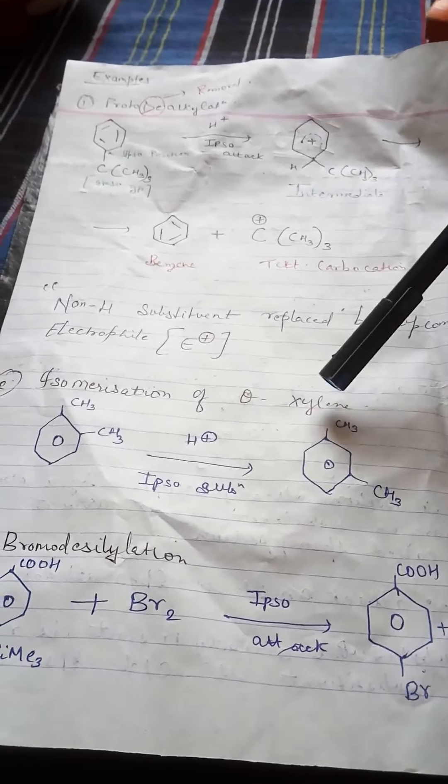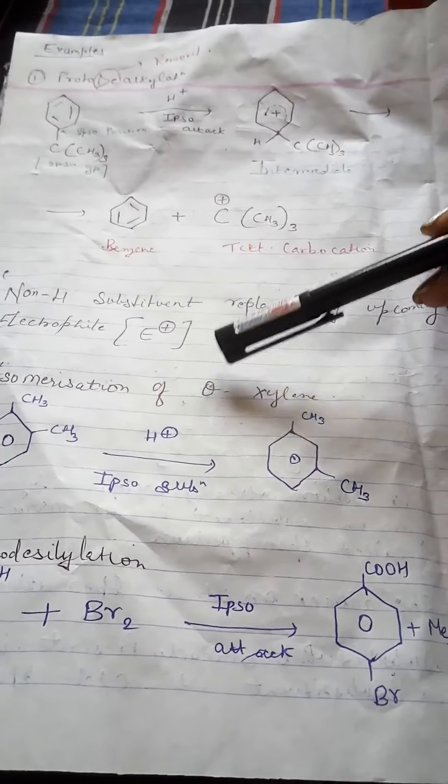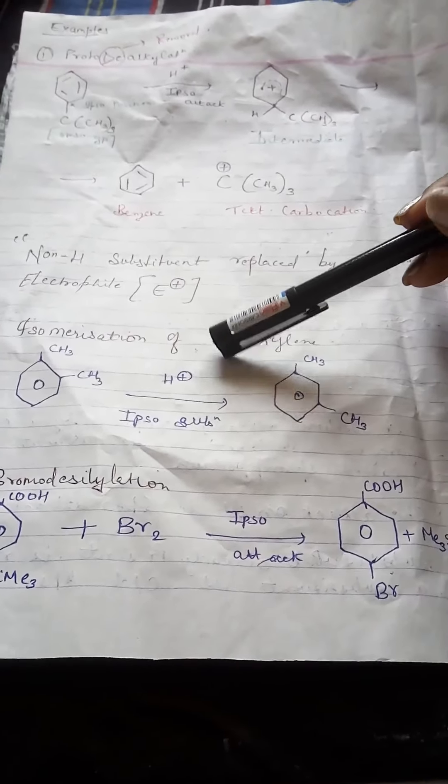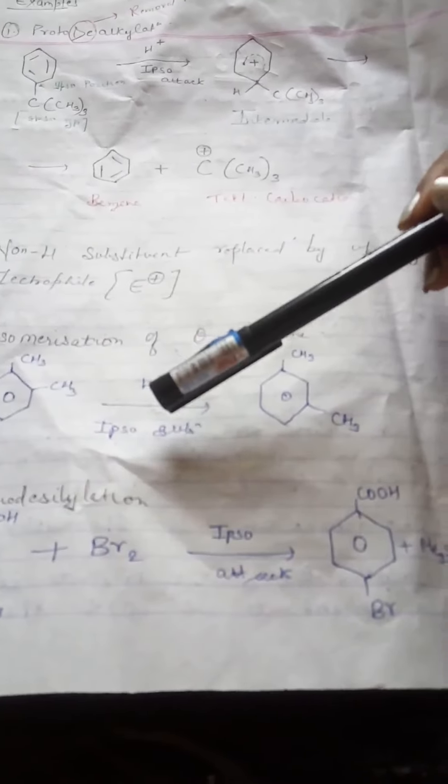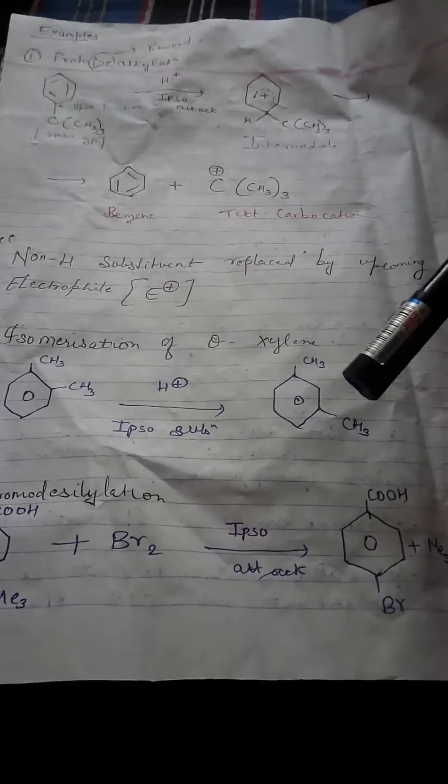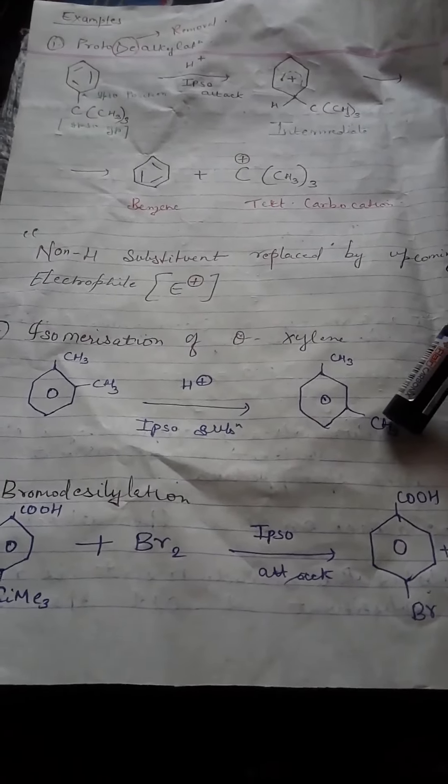Isomerization of ortho xylene. When isomerization of ortho xylene happens, a rearrangement occurs. When ipso substitution form of ortho xylene happens, you will get meta xylene.